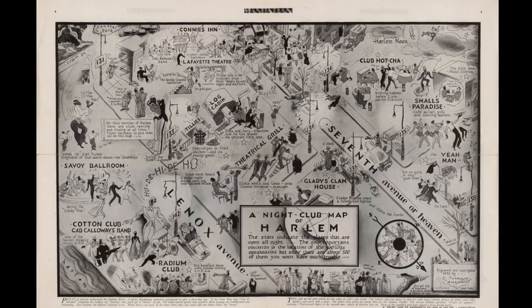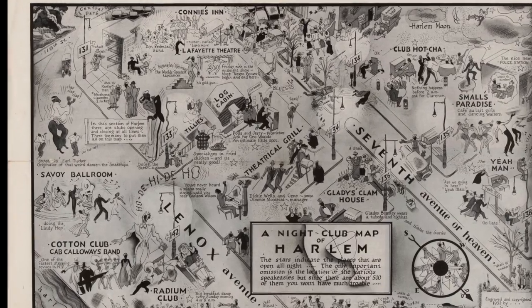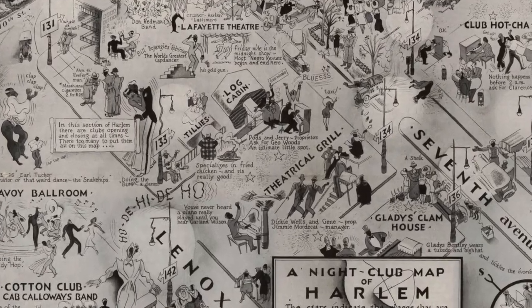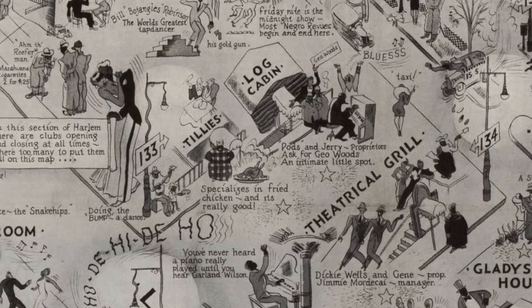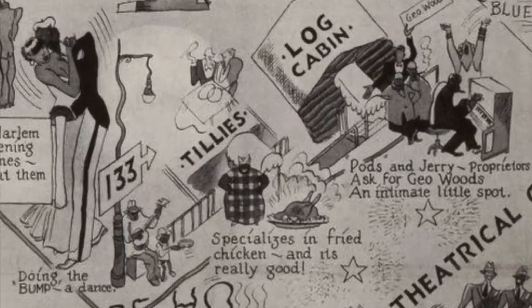Soon enough she was able to open her own place. She moved just next door at 48th West and 33rd Street and she called it Tilly's Chicken Shack. And so she had her own venue and she just continued selling chicken to the masses.